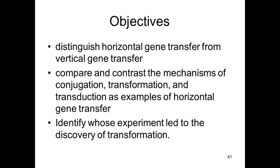Moving on to horizontal or lateral gene transfer. What we've discussed so far is vertical gene transfer — a mutation in DNA gets passed to the next generation. With horizontal gene transfer, genetic information moves from one organism to another. We're not talking about a cell dividing and passing DNA to progeny, but a cell giving information to a cousin. There are three main ways: conjugation, transformation, and transduction.